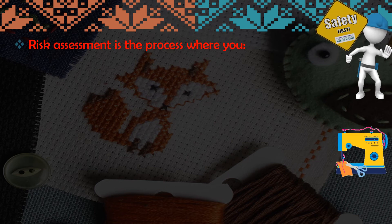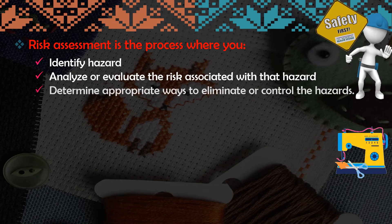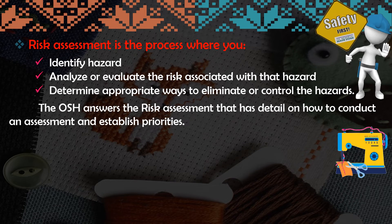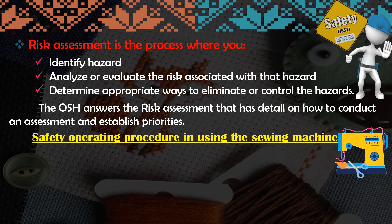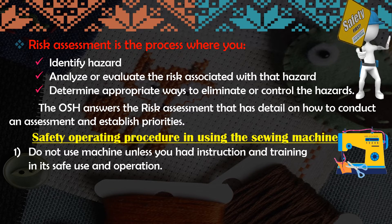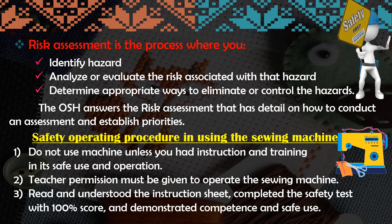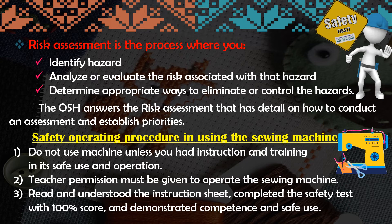Risk assessment is the process where you identify hazards, analyze or evaluate the risk associated with that hazard, and determine appropriate ways to eliminate or control it. The occupational health and safety guidelines detail how to conduct an assessment and establish priorities. Here are some safety operating procedures for using the sewing machine: first, do not use the machine unless you have had instruction and training in its safe use. Second, permission must be given to operate the sewing machine. Third, read and understand the instruction sheet, complete the safety test with 100% score, and demonstrate competence in safe use.